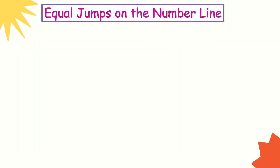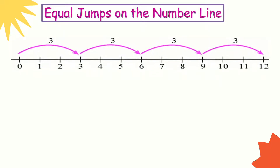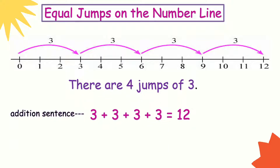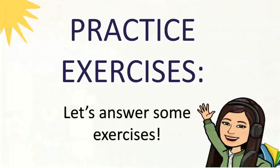We can show multiplication as repeated addition using equal jumps on the number line. There are 4 jumps of 3. The addition sentence is 3 plus 3 plus 3 plus 3 equals 12, and the multiplication sentence is 4 times 3 equals 12.